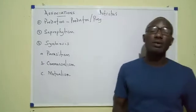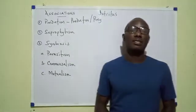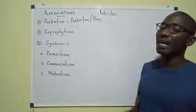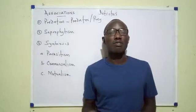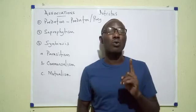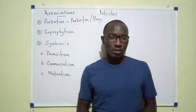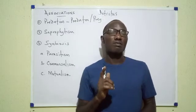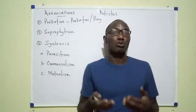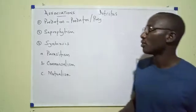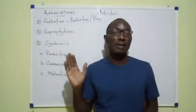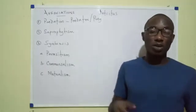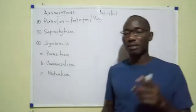For saprophytism, a saprophyte is an organism that feeds on dead, decaying organic matter. This dead decaying organic matter is referred to as dead treaters. Because saprophytism involves feeding on dead matter, it involves only one living organism — not more than one. A past question asks: which feeding association involves only one living organism? The answer is saprophytism, or saprotrophism. Examples of saprophytes include bacteria, fungi, earthworms, and the dung beetle.